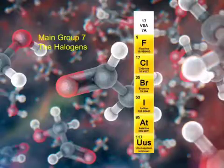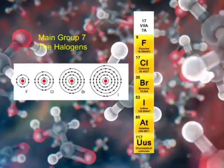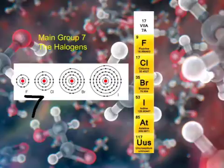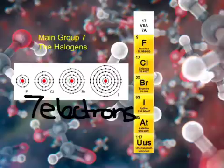All right, here in main group number seven, we have the halogens. So you'll notice that elements in this group have seven electrons in their outer shell. So that makes them kind of the opposite of group one, that had only the one electron in their outer shell. So they're really reactive as well, very kind of explosive in the opposite way.